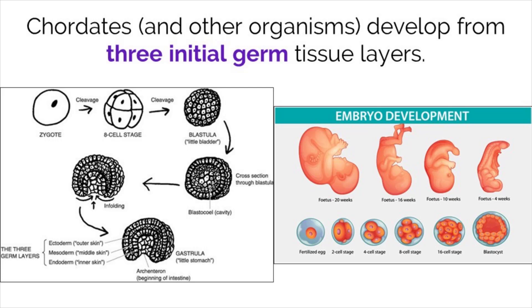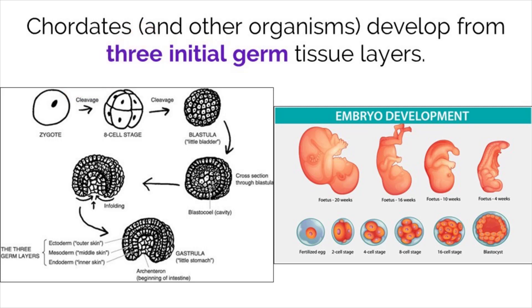When learning about the nervous system, it is important to understand how neurons are formed. We should know that we all start off as one simple cell after our father's sperm fuses with our mother's egg, but what happens after that is less known by most people and is pretty amazing.